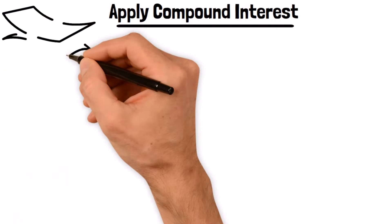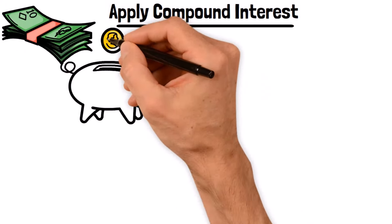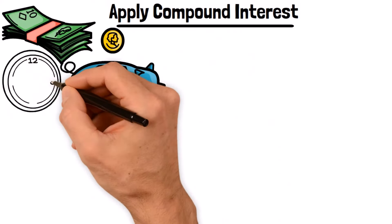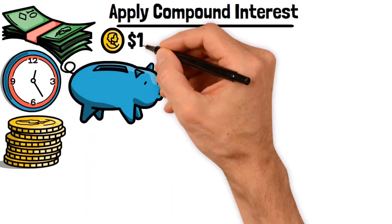Apply compound interest. Compound interest is when you earn interest not only on your initial investment, but also on the accumulated interest over time. Essentially, your money starts to work for you. Now, let me illustrate this with an example.